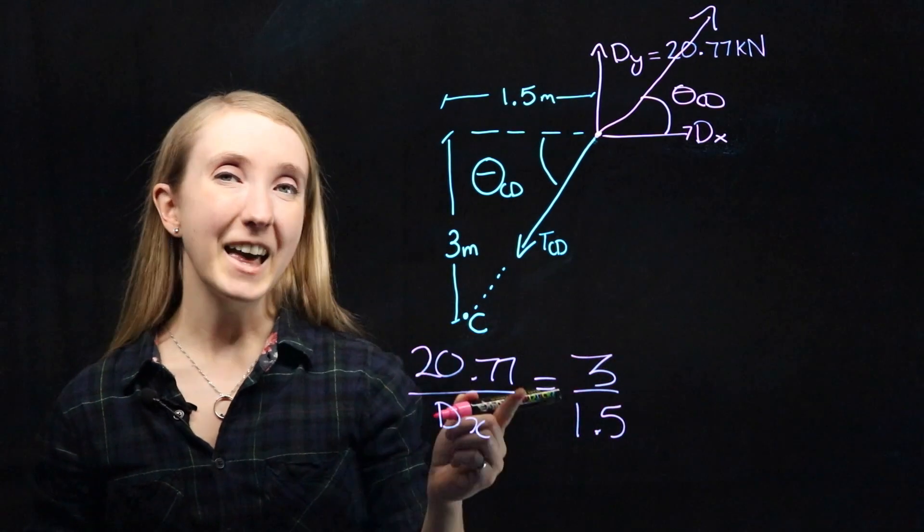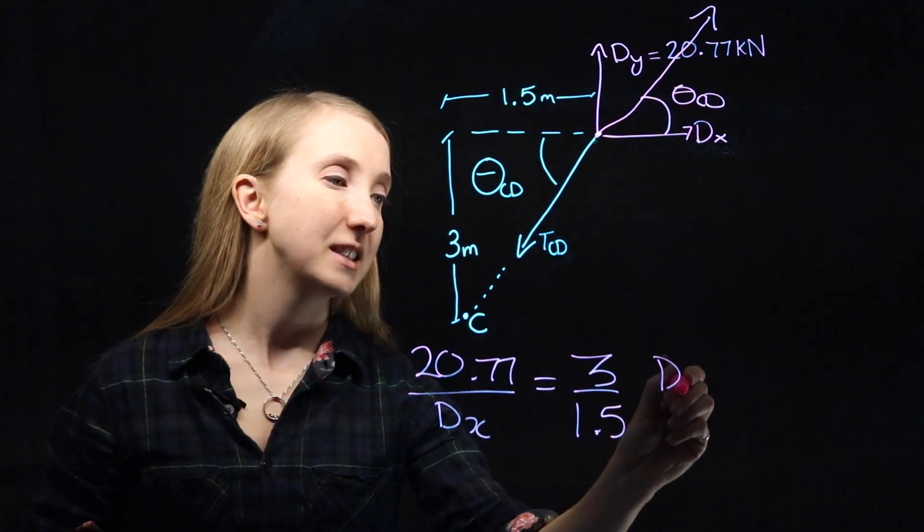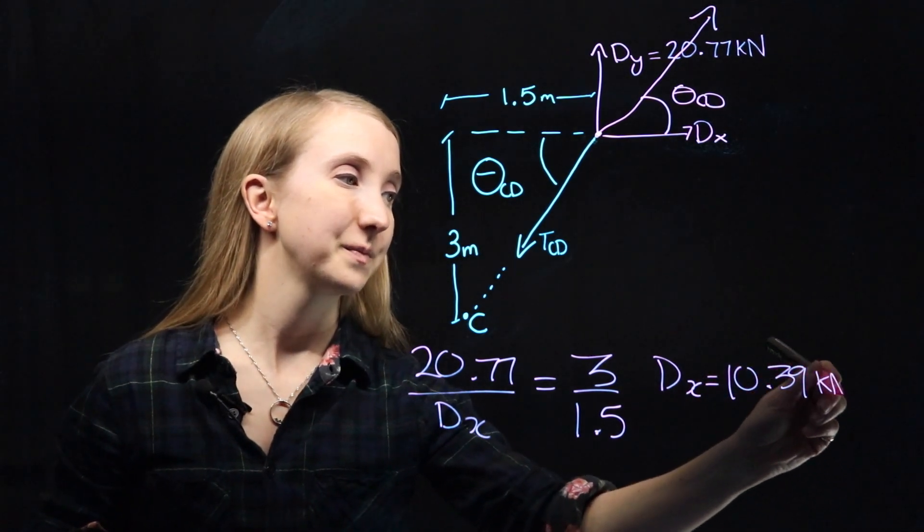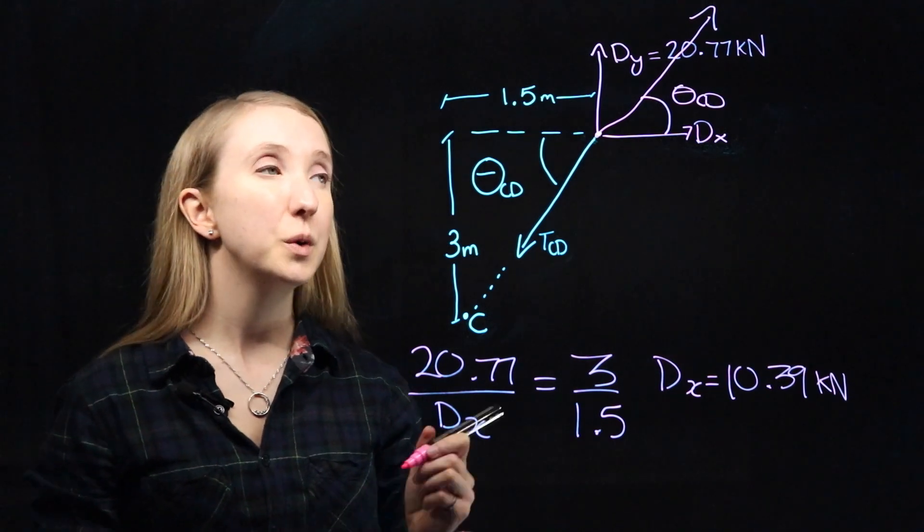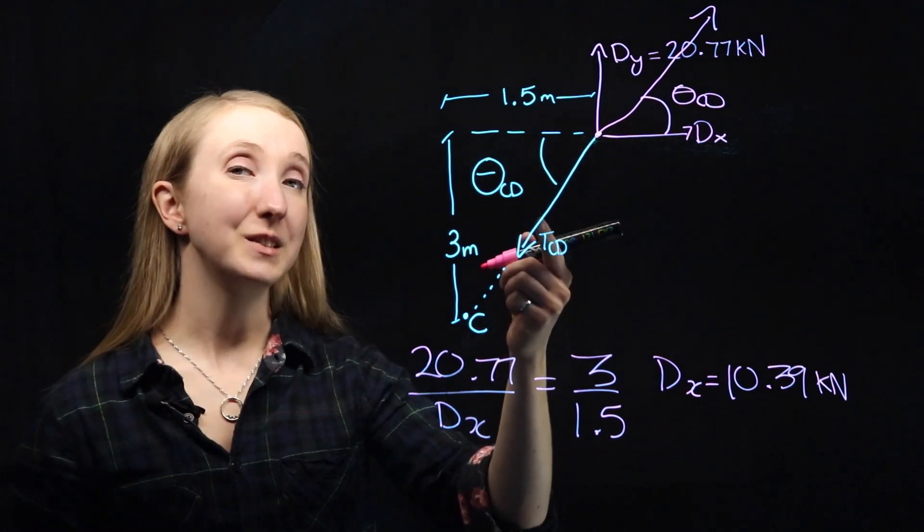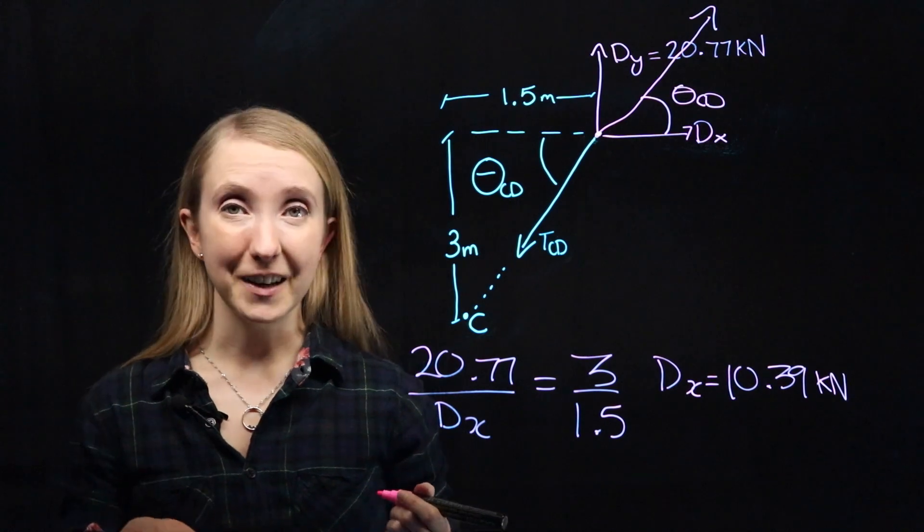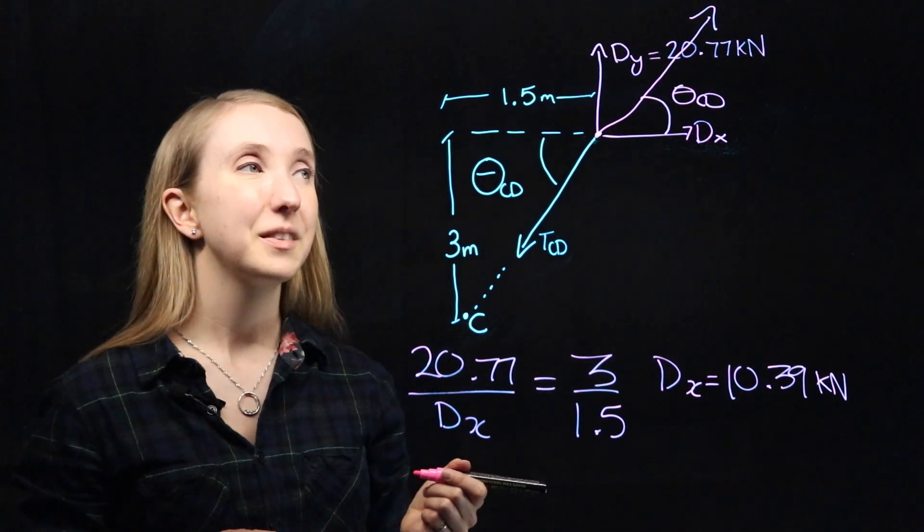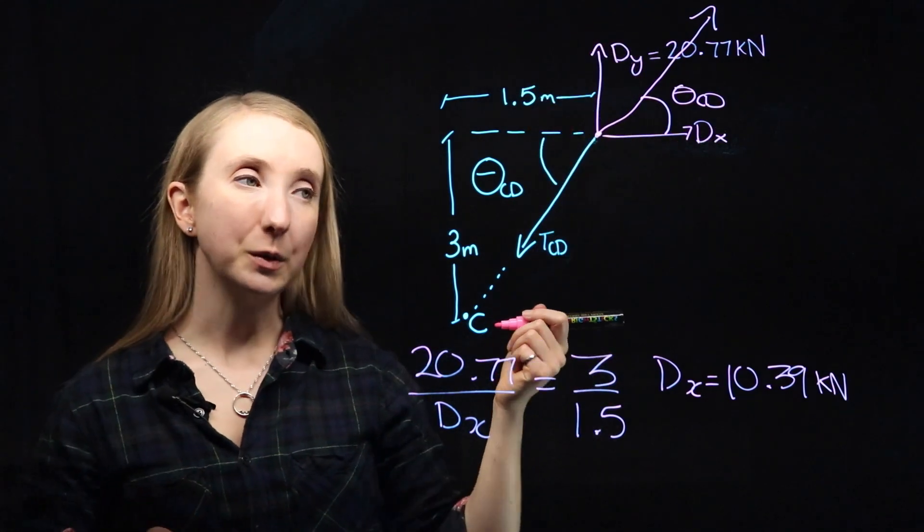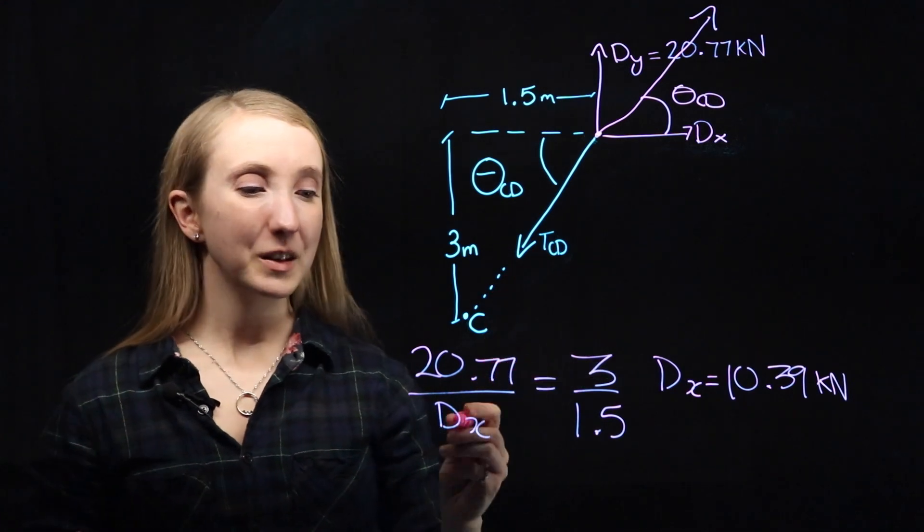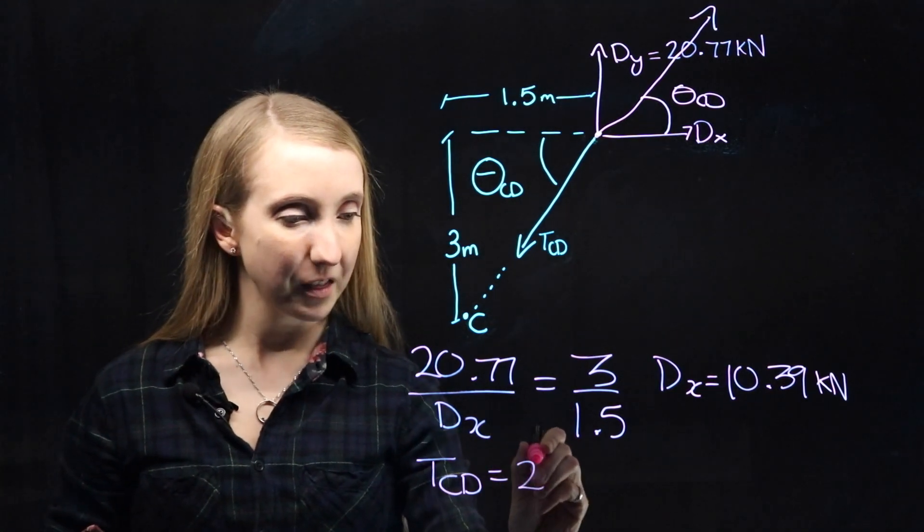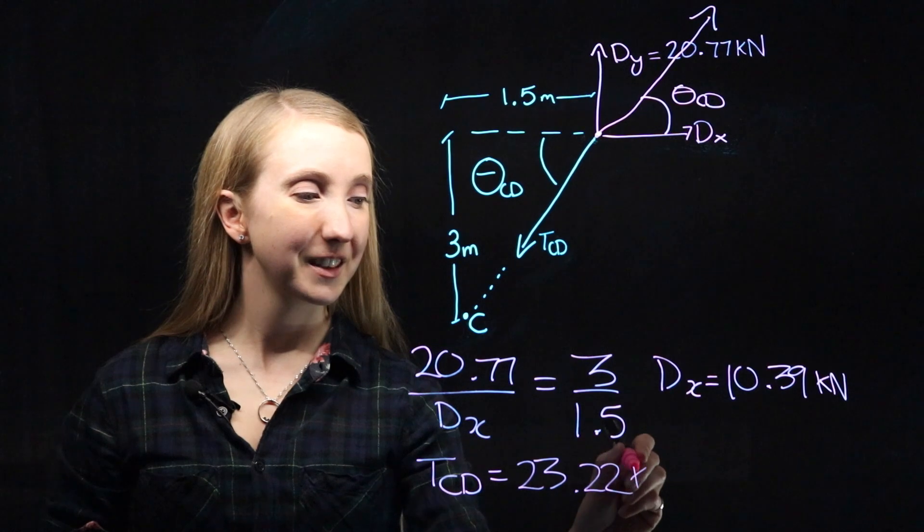We can use that to solve for dx directly, which gives us the same as last time, 10.39 kilonewtons. Then, since we know our dx and our dy are equal to our x and y components of TCD, we can use Pythagoras to solve for TCD. That means that dx squared plus dy squared would be equal to TCD squared. You can solve that to get the same thing that we got last time, which was 23.22 kilonewtons.